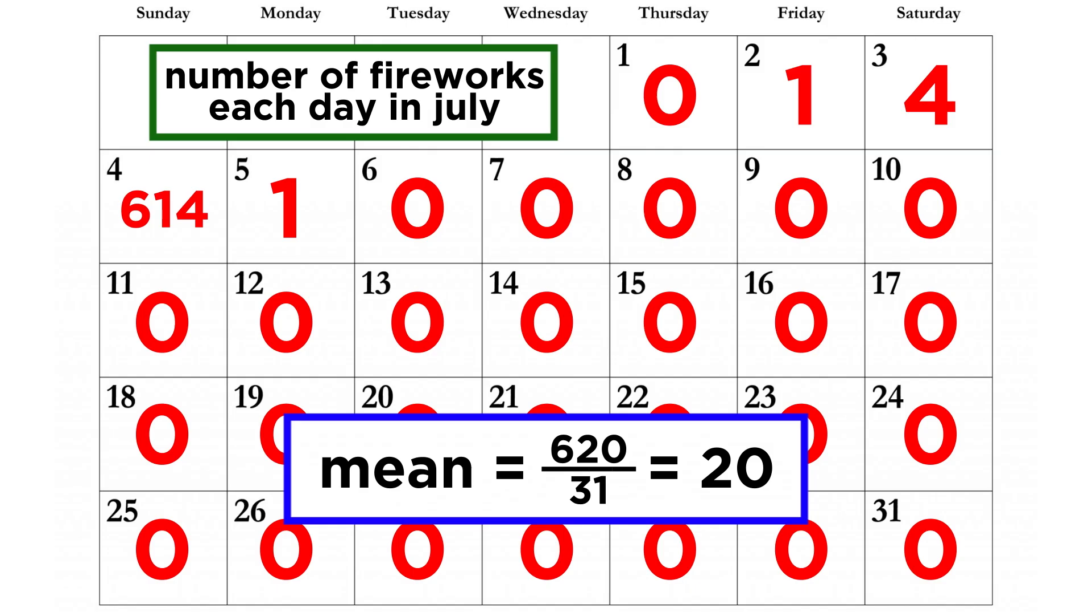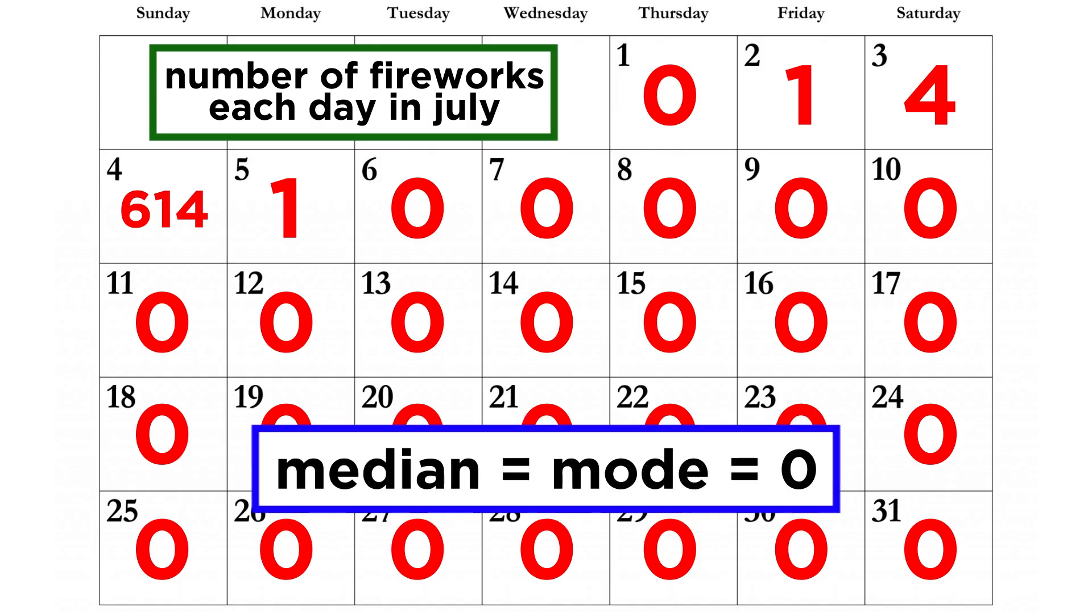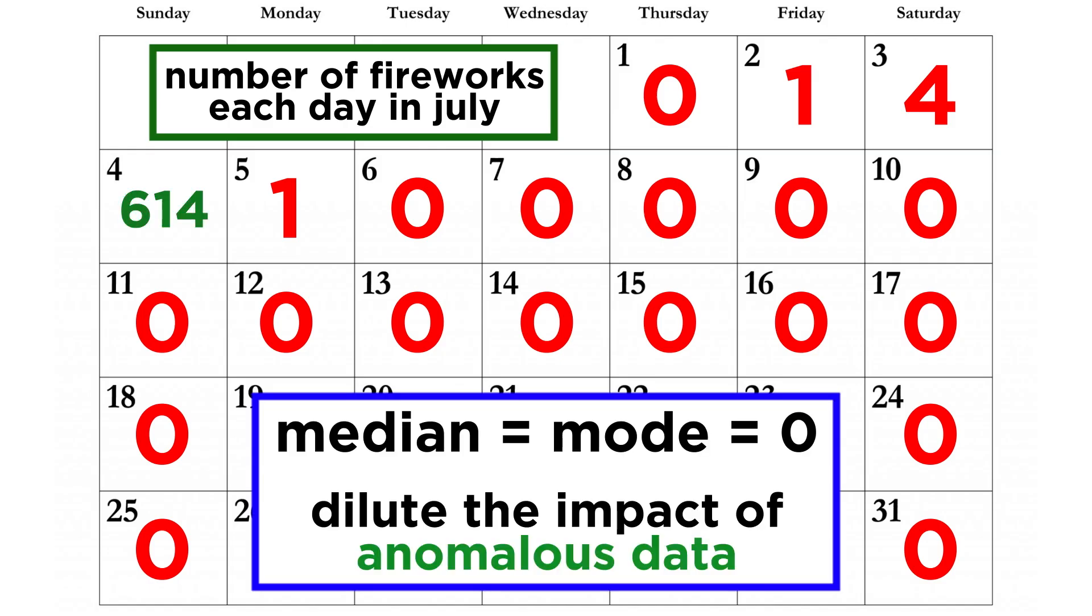If we were to simply take the mean of this data set, we would get an average of a few dozen fireworks per day. But while this is the average value, it certainly does not describe the average day in that town. Instead, the median, or the mode, which are very likely to be zero, are better descriptors of the average day in the town, because these types of averages dilute the impact of anomalous data.